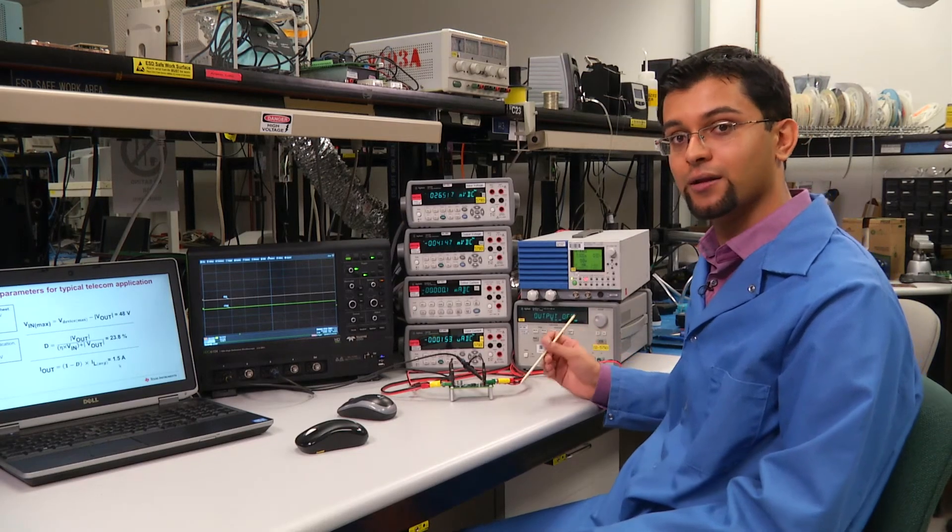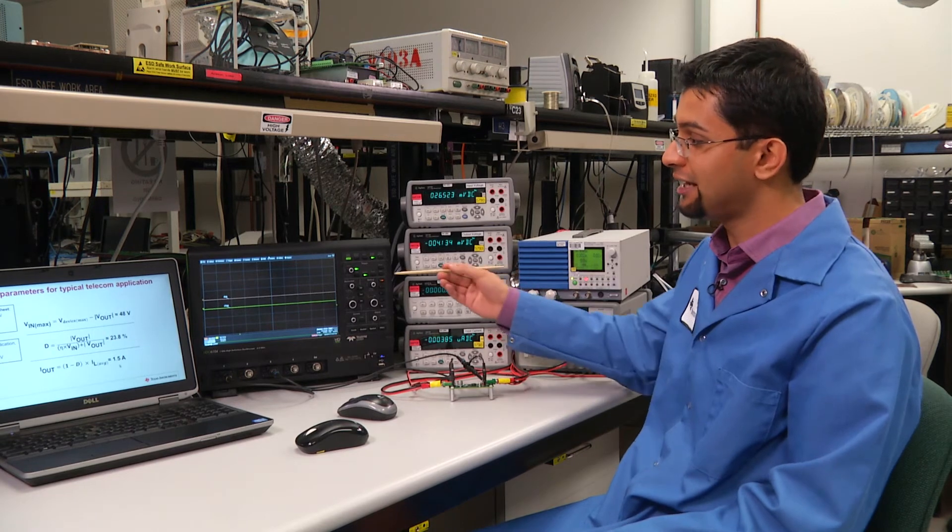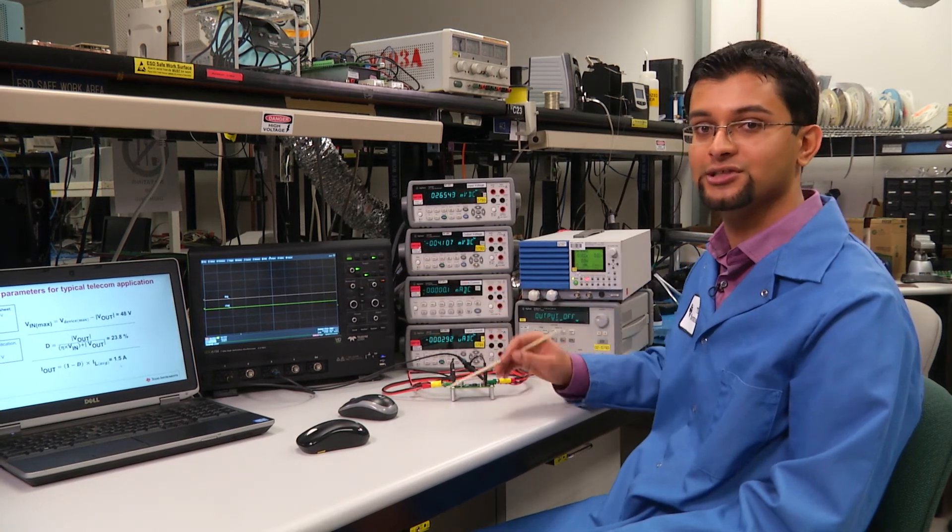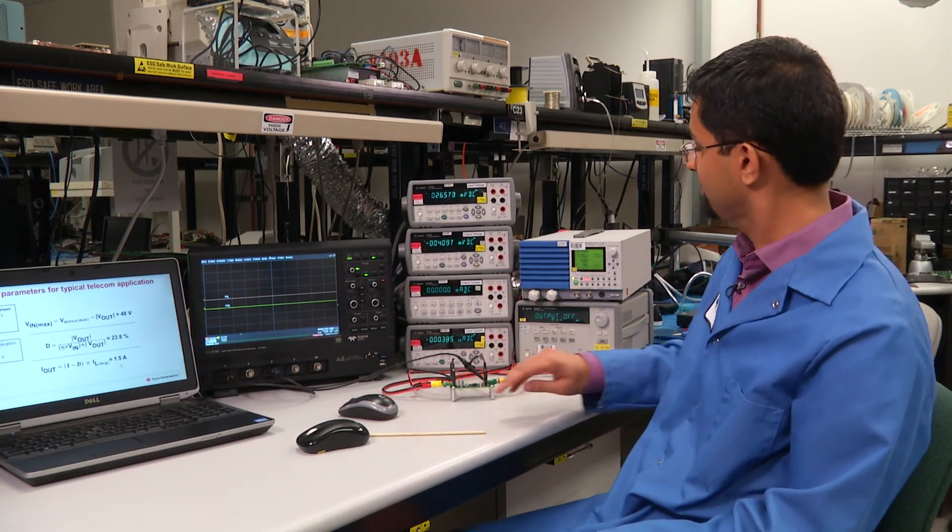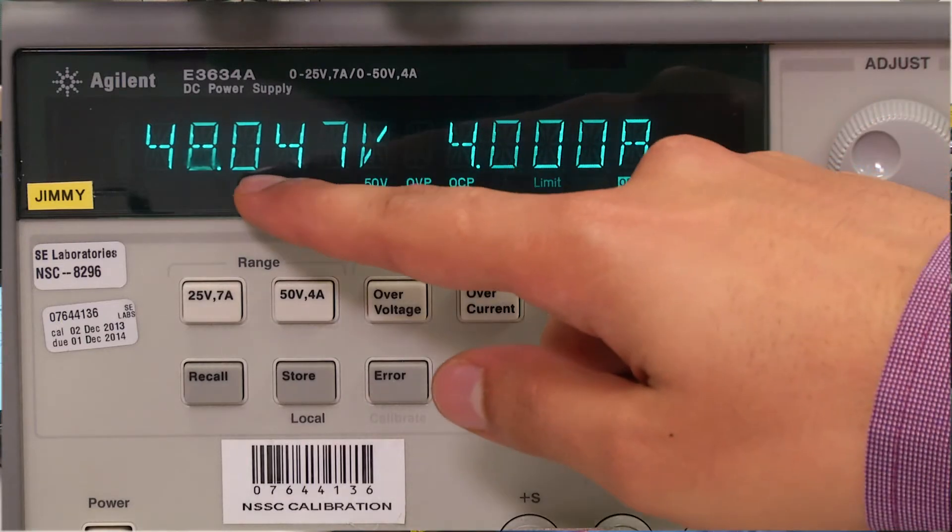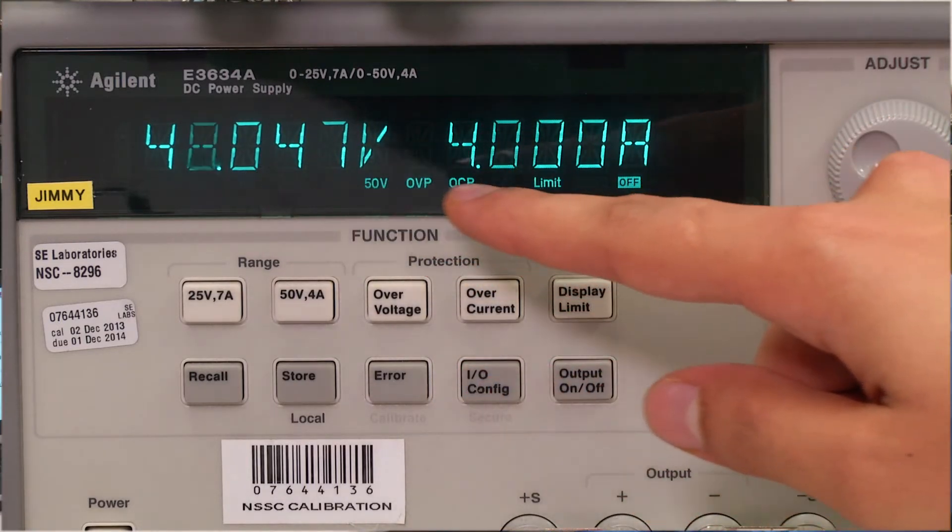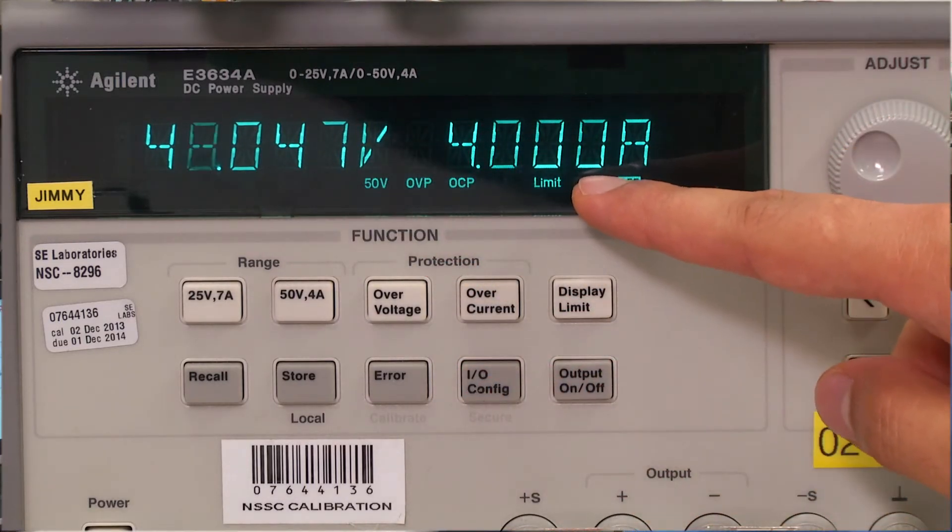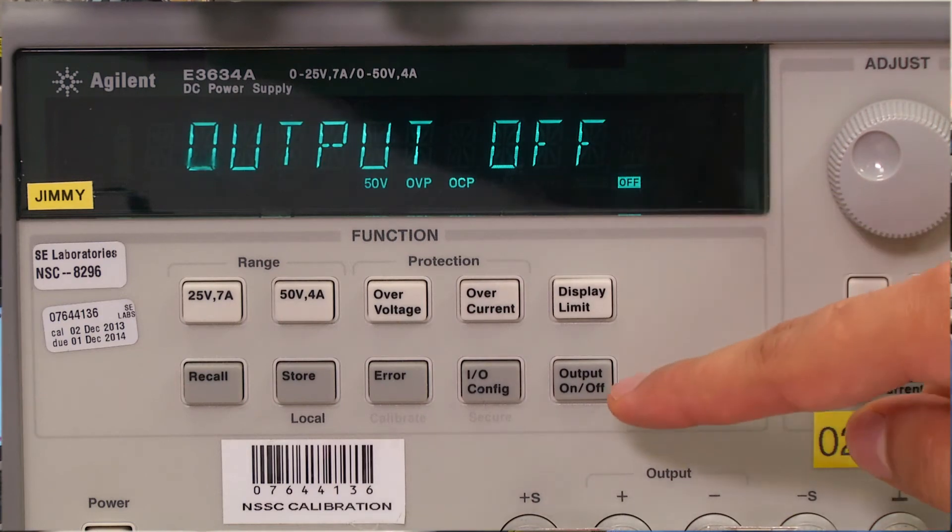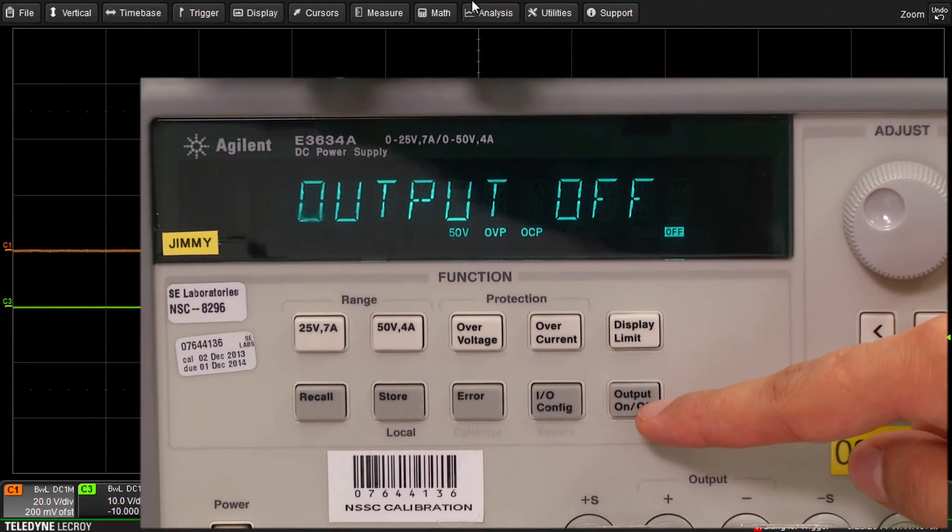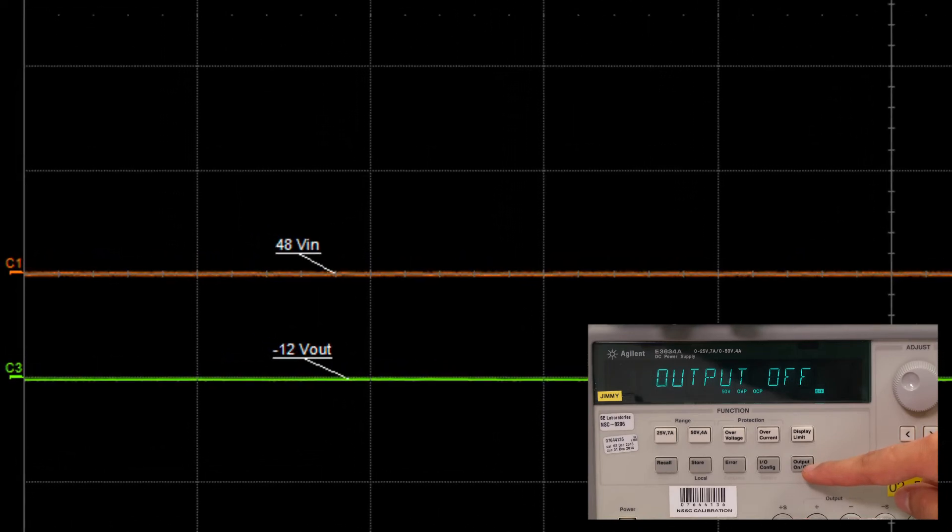I'm going to now switch on the power supply and we're going to see a startup waveform appear on the scope. The input voltage set to 48 volts and the current set to 4 amps. I'm now going to turn on the power supply and deliver 48 volts to the board.